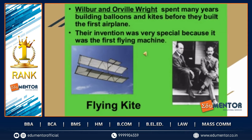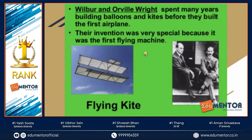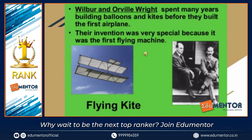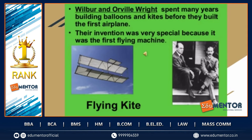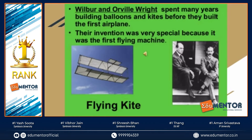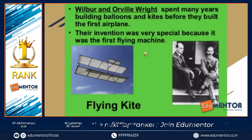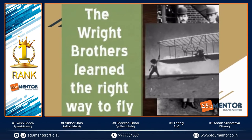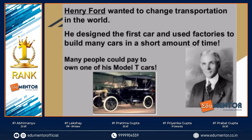The Wright Brothers — Wilbur and Orville Wright — started their experiments years ago building balloons and kites, and finally built the first airplane. The airplane is very special: it saves a lot of time, allowing you to reach your destination in one-third or one-fourth of the time that a long train journey would take. The inventors of the airplane are the Wright Brothers.